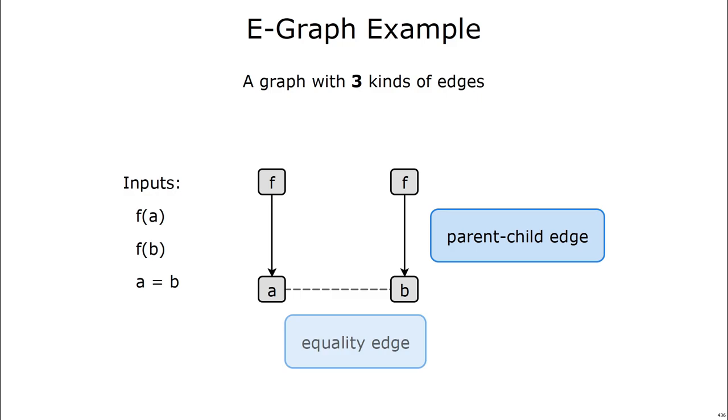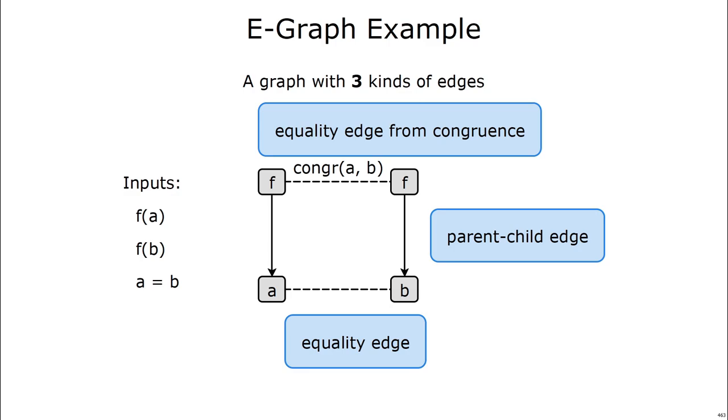Now let's add our single equality, and we'll do that by adding an equality edge shown in the dotted line between a and b. Finally, the third kind of edge is from congruence. The e-graph will automatically figure out that f of a is equal to f of b, and add another equality edge, this time from congruence.